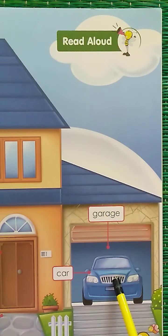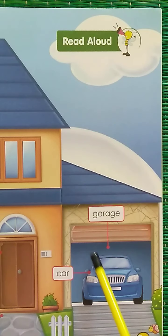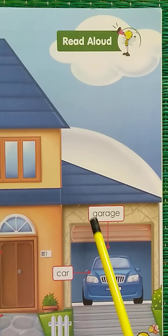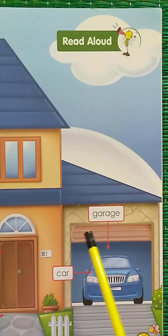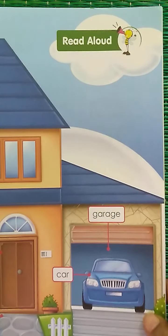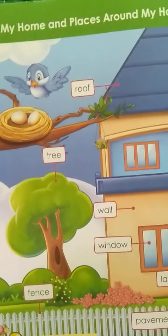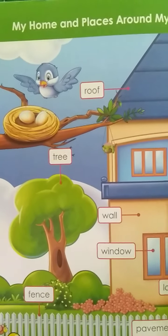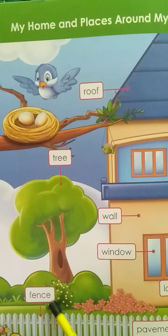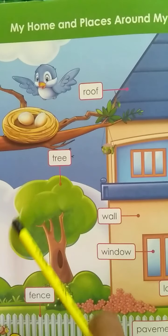This is a car and the place where you park the car is called as garage. The place where you park the car is called as garage. Now let's look at the places around the home. There is a big tree here. What is this called as? Tree.